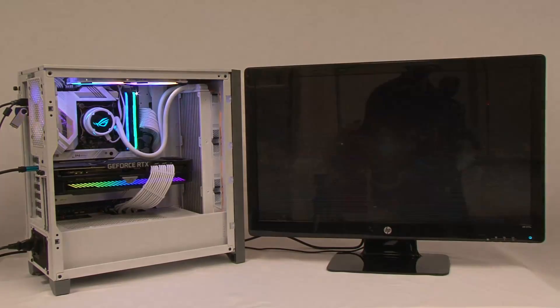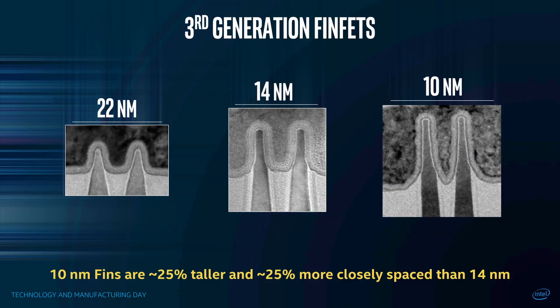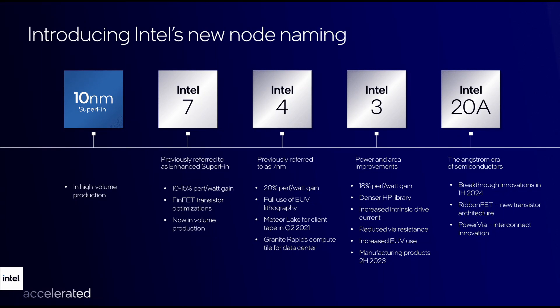In short, the increase in cache means software applications can be opened faster. Intel went to a completely new architecture, moving from the 14nm process that was introduced in 2016 to their new 10nm process rebranded as Intel 7, which is the new architecture roadmap announced in July 2021.